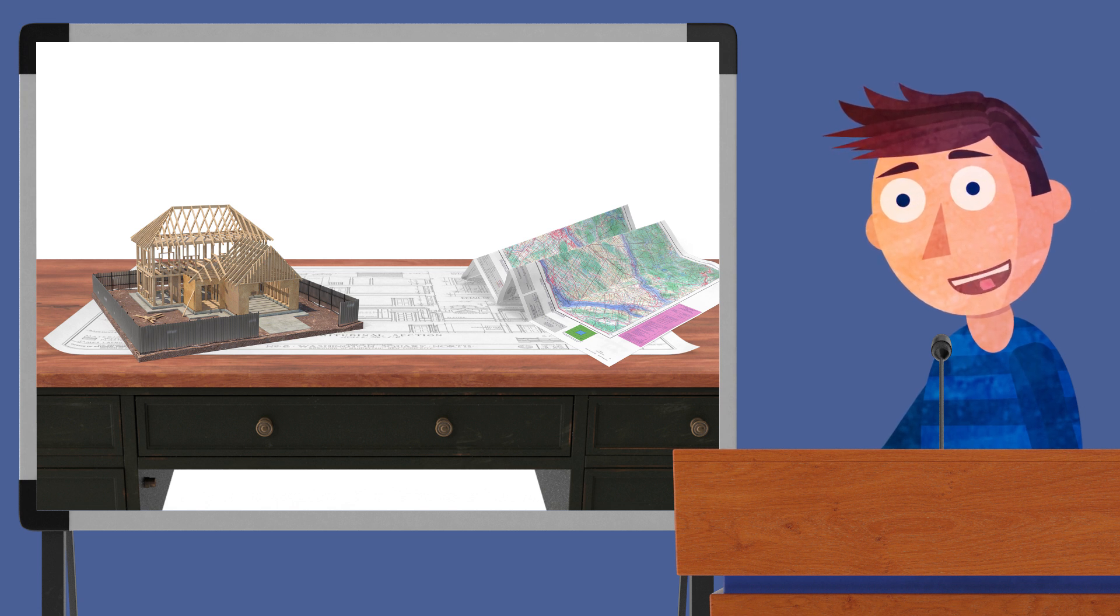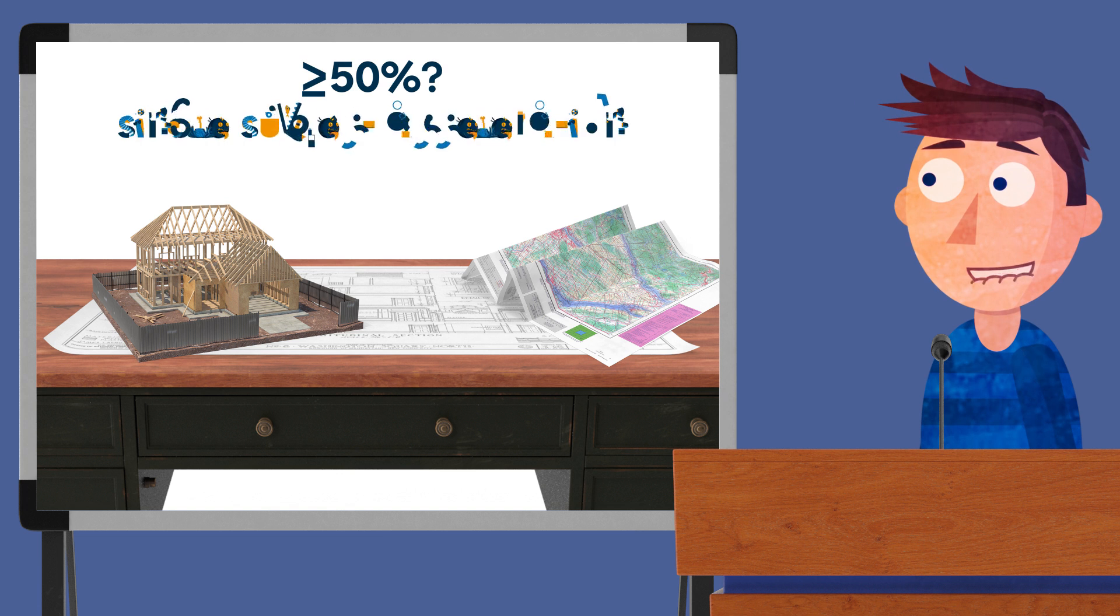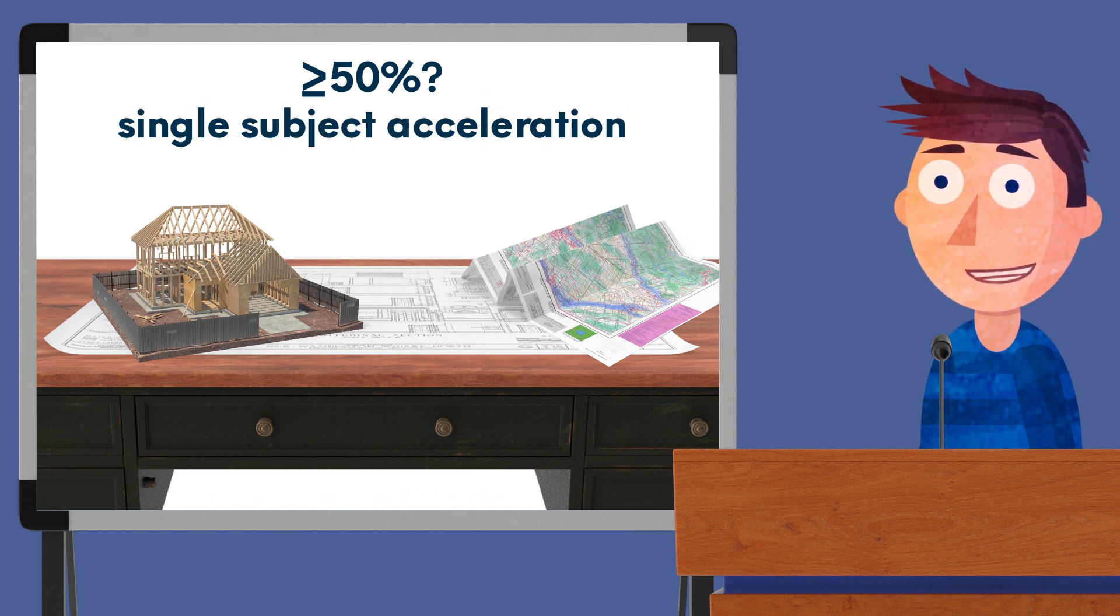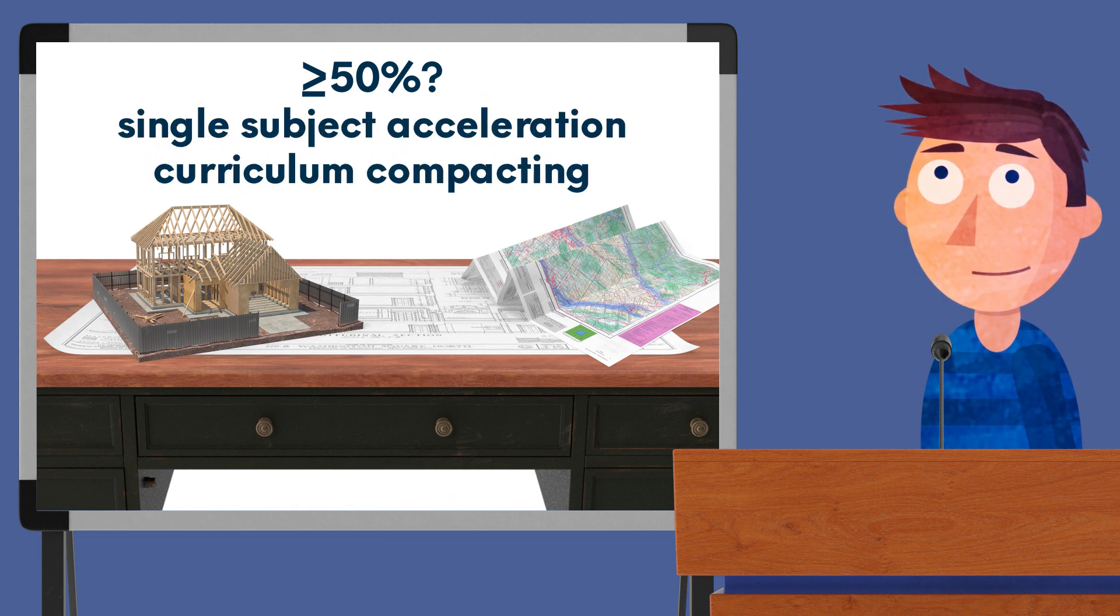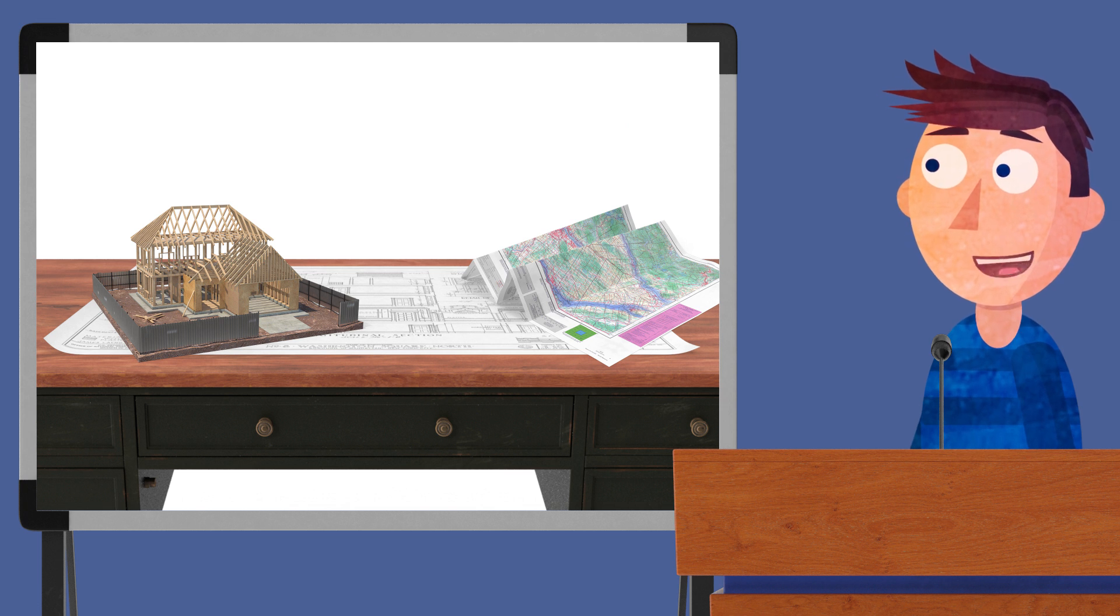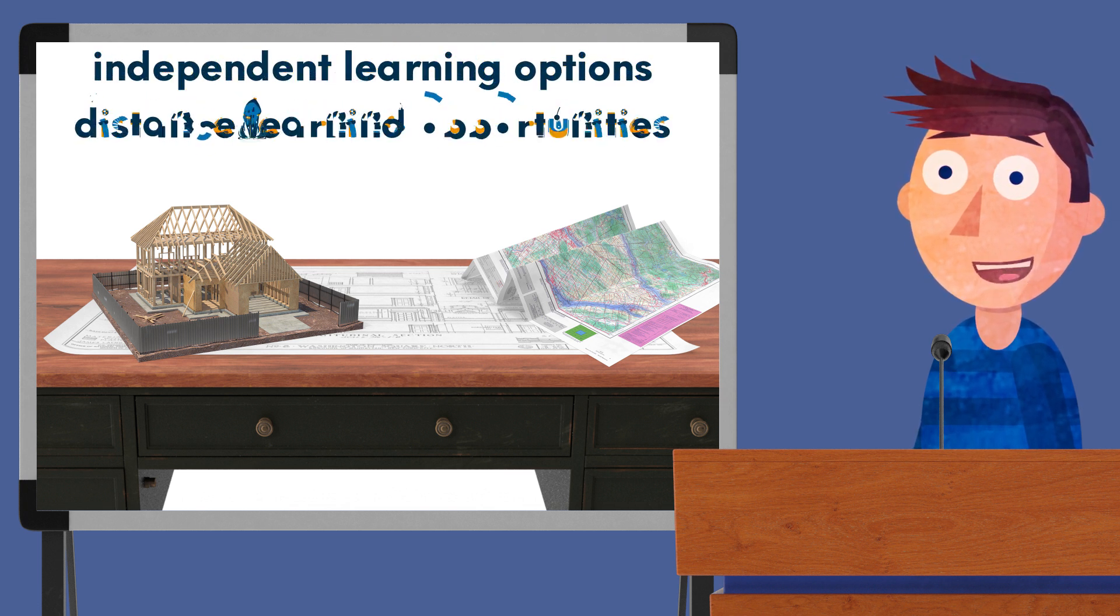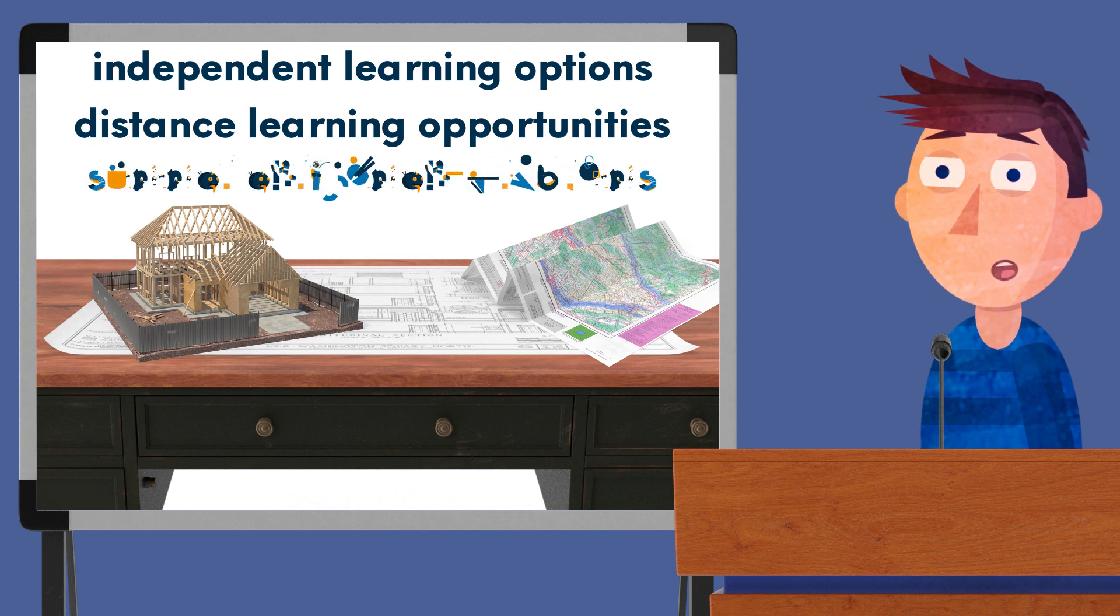For instance, if your child scored in the 50th percentile or above on a particular subtest, you could look into things like single-subject acceleration or curriculum compacting. If they scored up to the 49th percentile, you might consider independent learning options, distance learning opportunities, as well as summer enrichment programs.